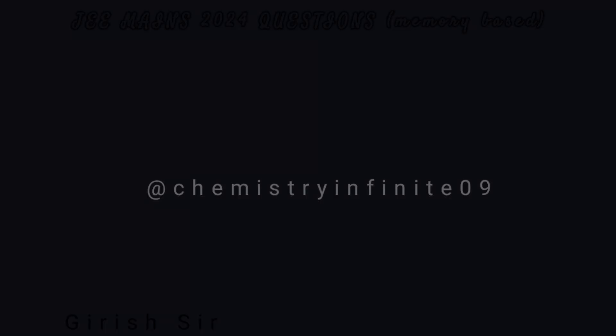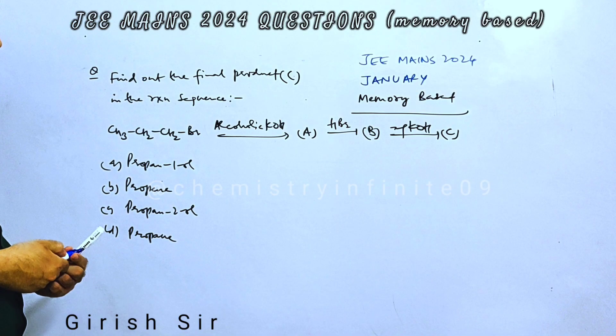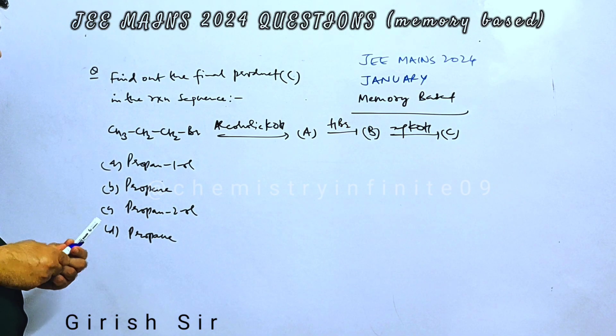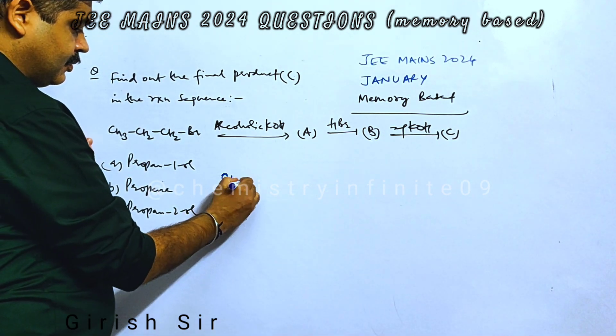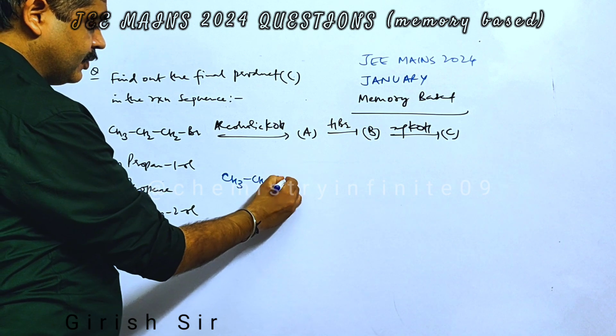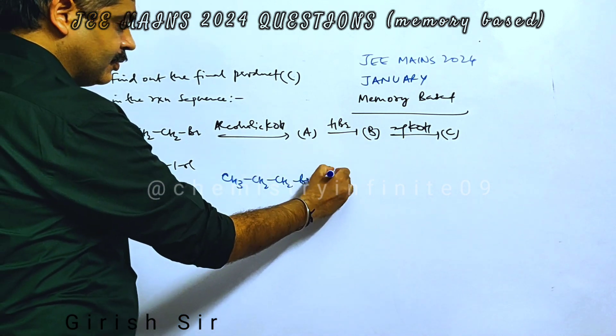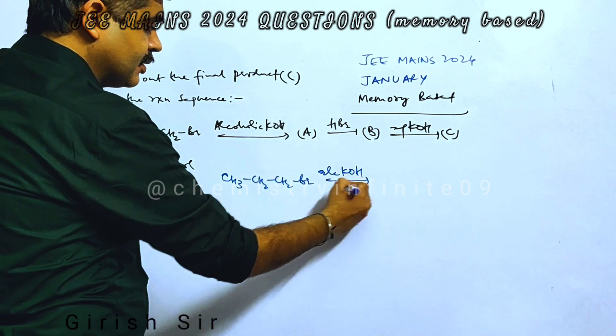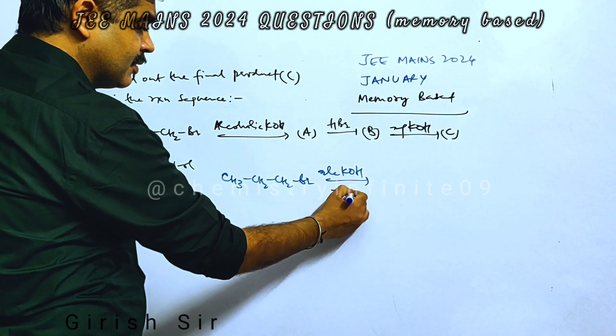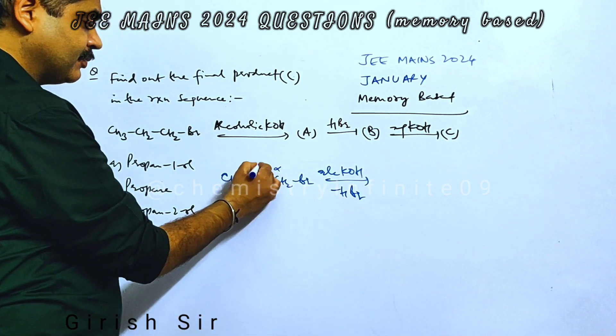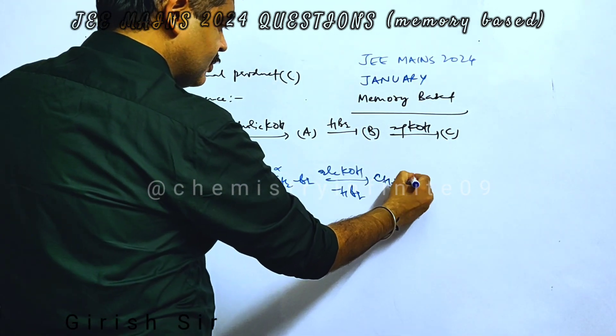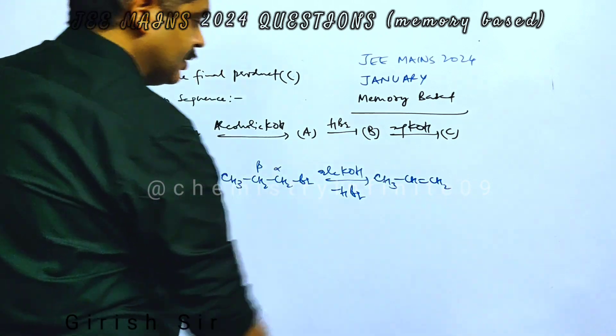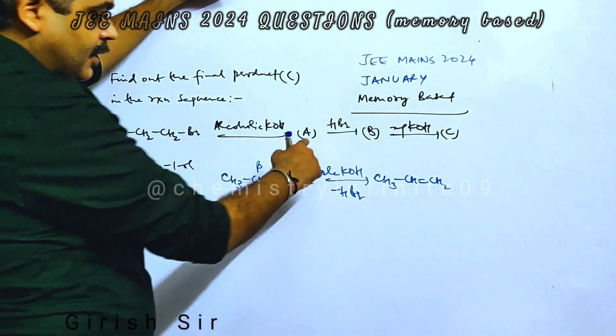Let's take a look at this question from organic chemistry. This is the compound capable. First of all, with alcoholic KOH, it undergoes elimination reaction, so HBr should be eliminated, which gives you this alkene.